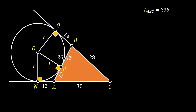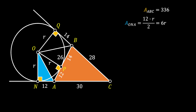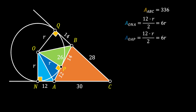Let's pull a line from point O to point A and from point O to point B. In this way we have formed four right triangles. The area of right triangle ONA equals half the product of its base and height, which gives 6R. Triangle OAP is congruent to our previous triangle and also has area 6R. For right triangle OPB, its area equals 14 times R over 2, which equals 7R.